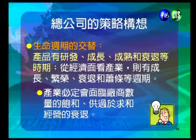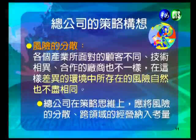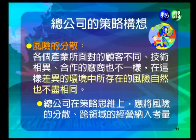第二點是中效的追求，總公司希望發揮旗下各公司的一加一大於二效果，有效分配內部資源，例如統一流通次集團在物流、倉儲、零售門市都能發揮良好的中效。第三點是生命週期的交替，產業有成長、繁榮、衰退和蕭條的週期，必須因應規劃。第四點是風險的分散，對各不同產業的技術與合作廠商，在不同環境下都存在經營風險，應納入總體策略思維。